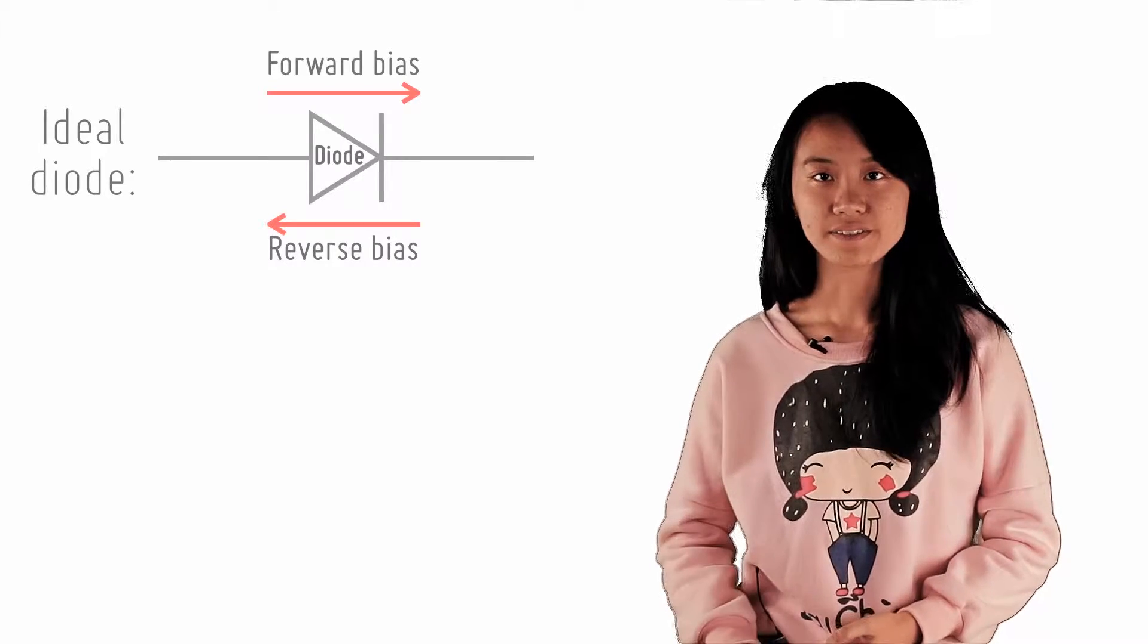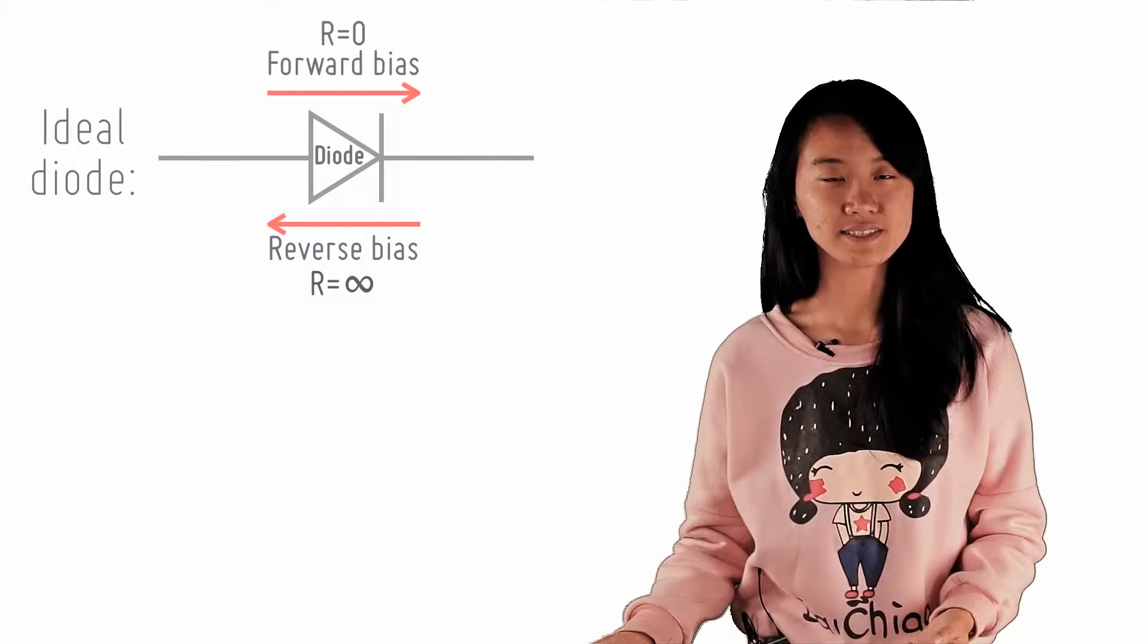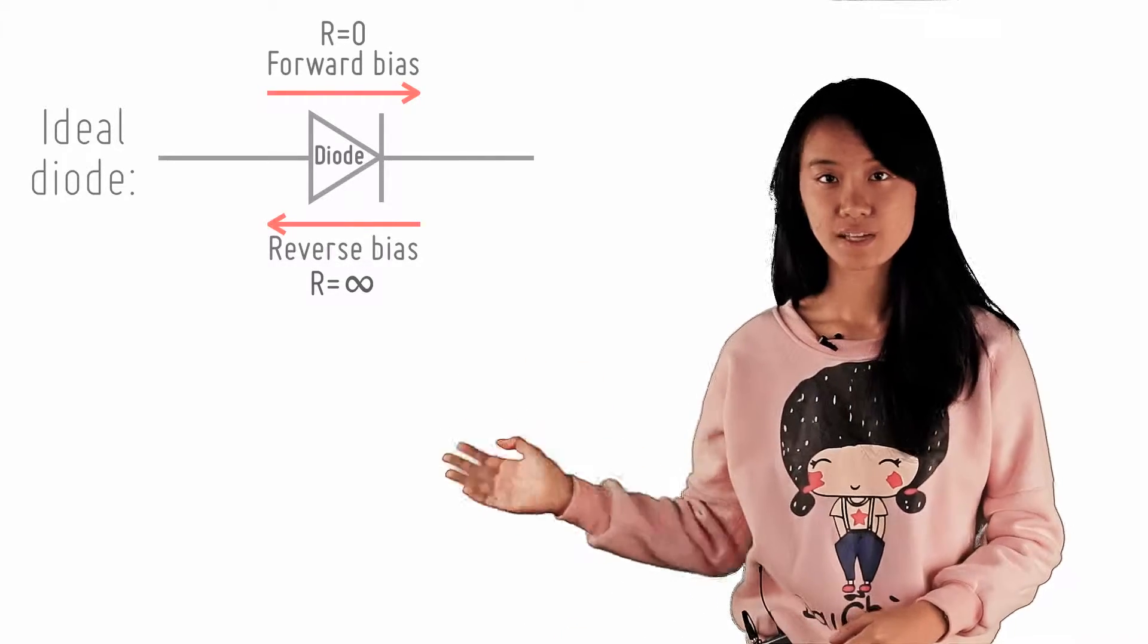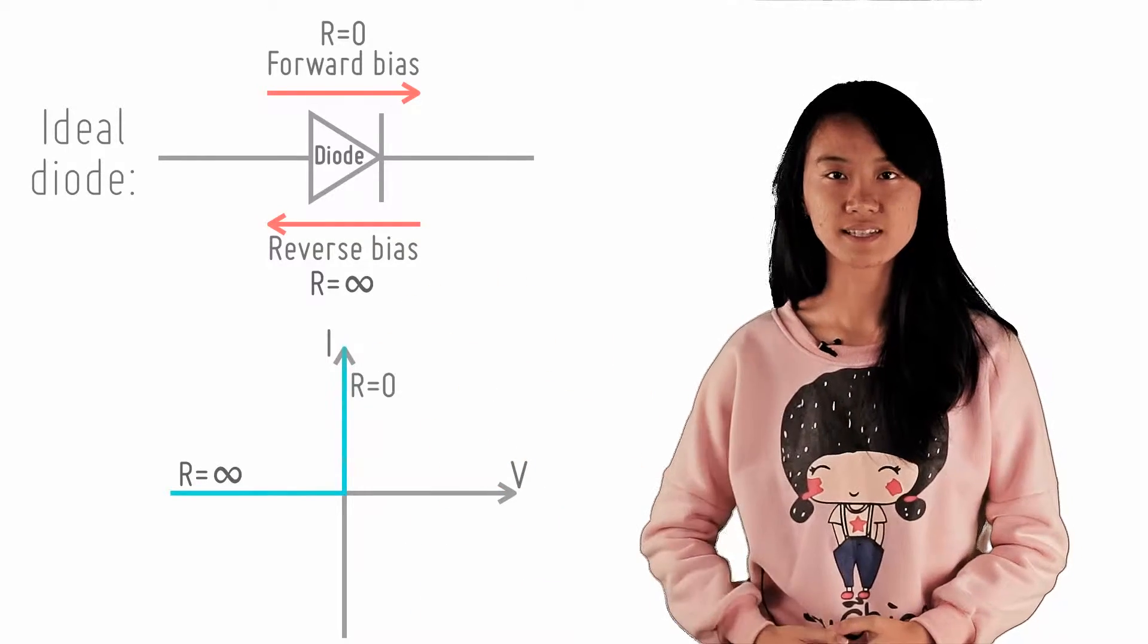In an ideal diode, the forward bias has zero resistance, while the reverse bias has infinite resistance, resulting in the IV characteristics as shown. The current for this first part is zero, and the current for the second part is infinitely large.